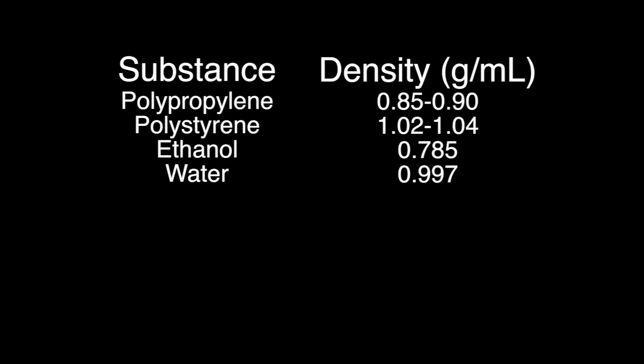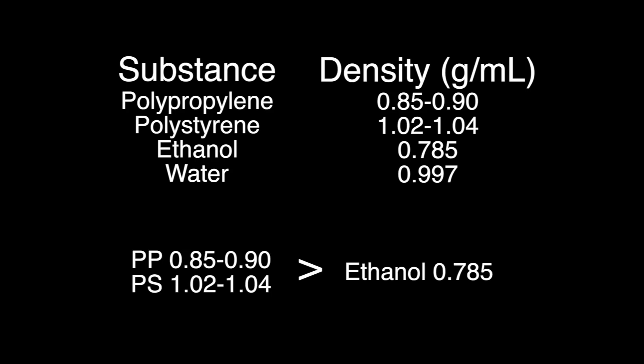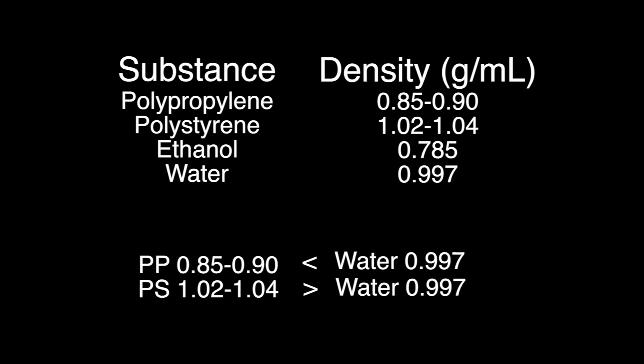Based on the numerical data shown here, it would be expected that both plastics would sink in ethanol, as both have densities greater than ethanol. In water, we would expect polypropylene to float since its density is less than water, while polystyrene should sink since its density is greater.